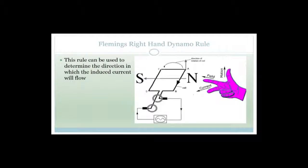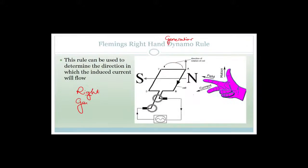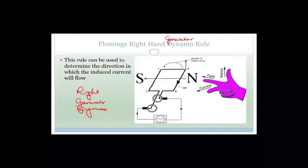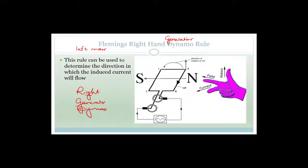You need to know there's a right-hand dynamo rule, also called a right-hand generator rule. The way I remember it — because there's going to be a left-hand motor rule as well — is that 'right' has a nice G in it, and both 'generator' and 'dynamo' have letters with tails. Whereas 'left' and 'motor' have no tails. So the dynamo or generator is the right-hand rule.